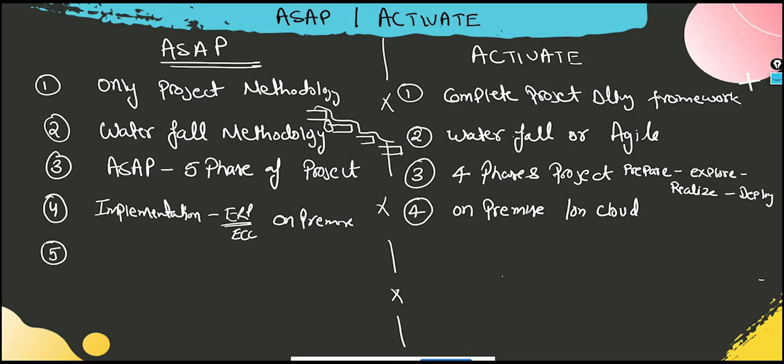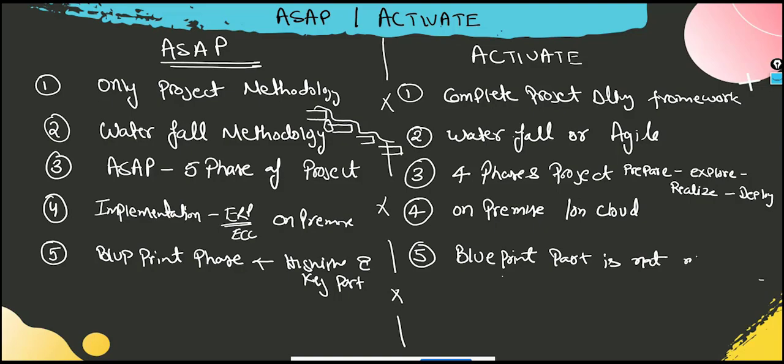Another difference. In ASAP, blueprint phase has been highlighted and would be key part, the creation of the blueprint. In Activate methodology, because it needs to support the agile one, blueprint part is not mandatory.